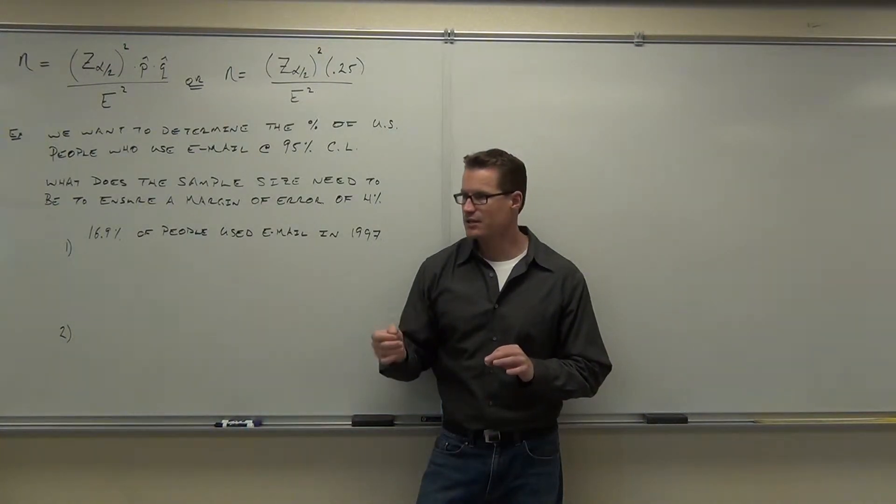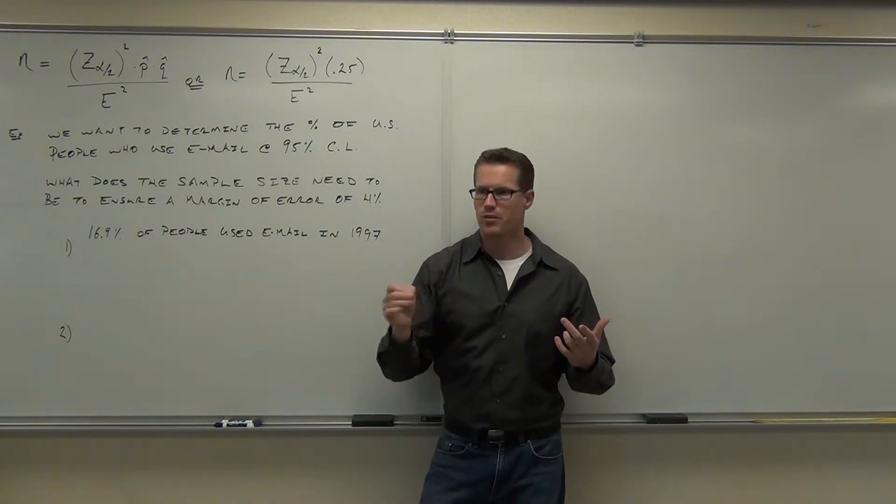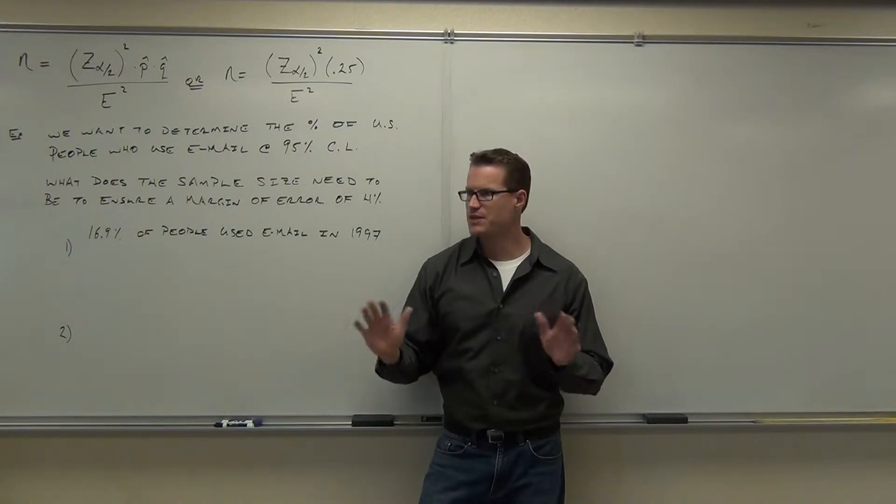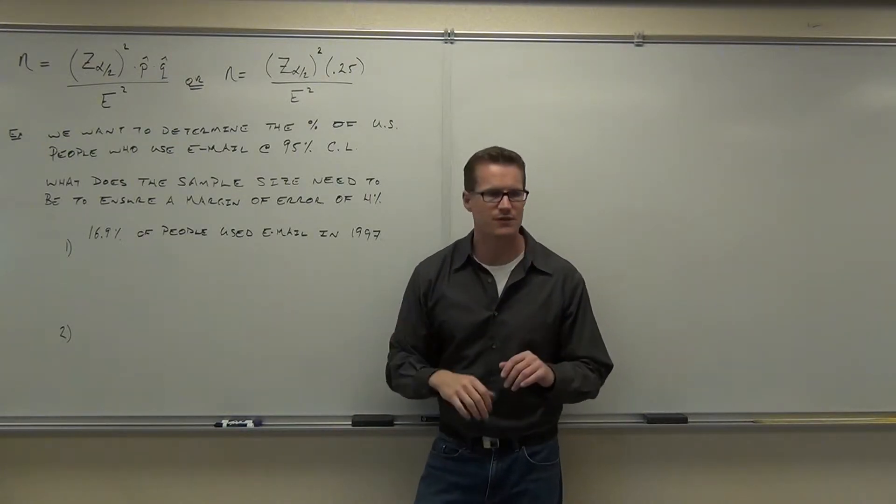A worst-case scenario is this. You don't know anything about the proportion of successes, and you don't know anything about the proportion of failures. If that's the case, then what you do, watch closely where this 0.25 comes from, what you do is you assume that both of them are 0.5, because 50-50 is the worst you can get.